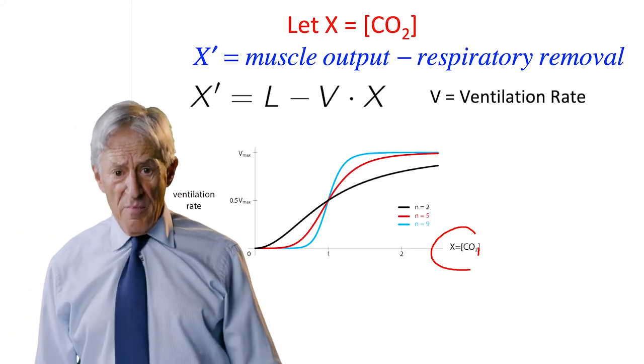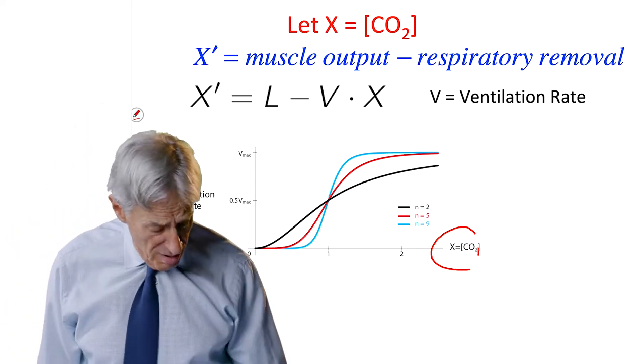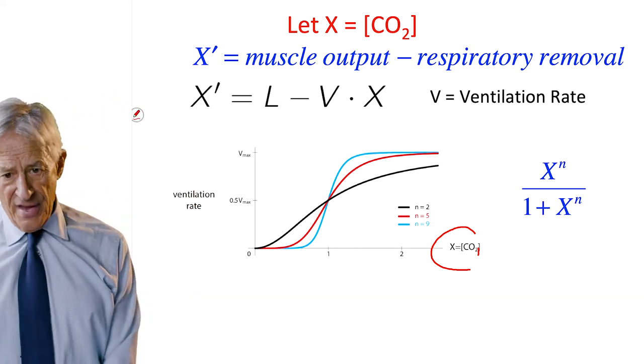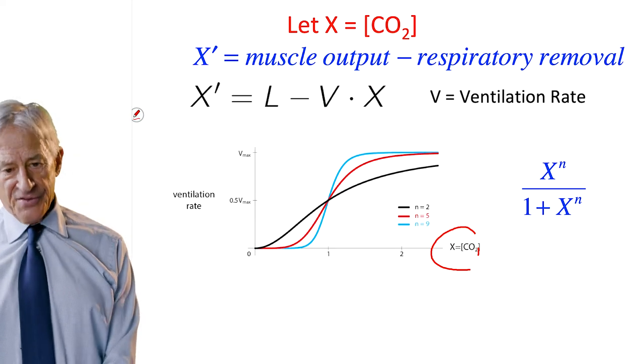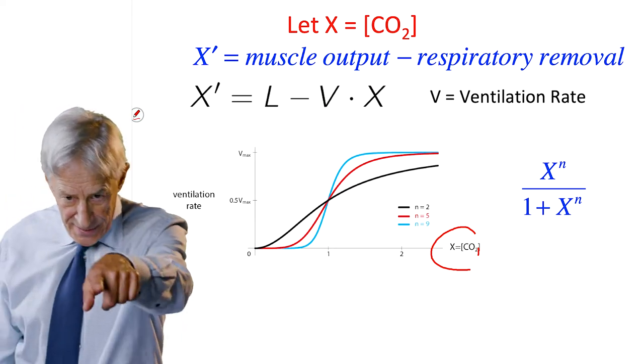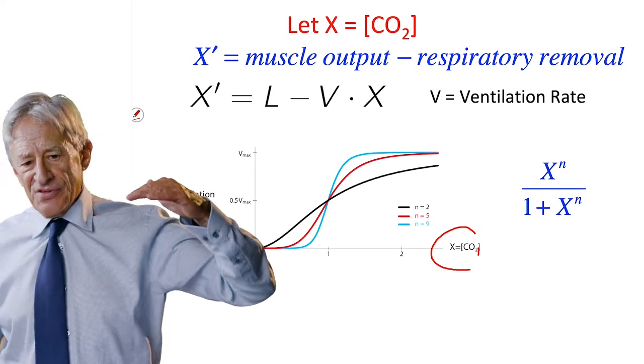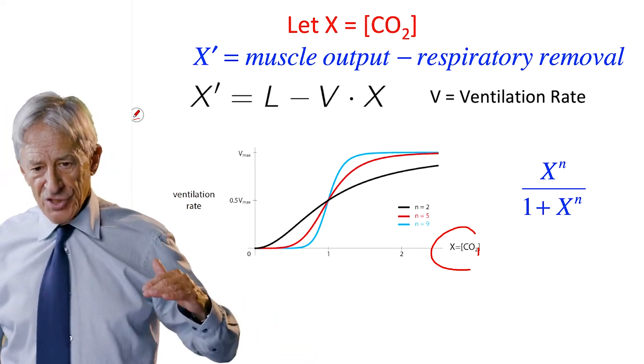And what is the mathematical form of these sigmoids? Well, you know this already. This is X to the N over 1 plus X to the N, where N is that N which modulates the steepness of the feedback function.